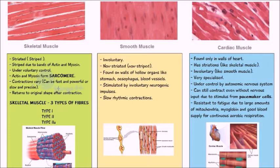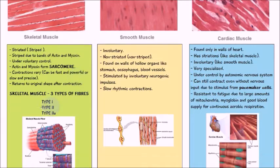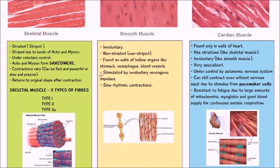The contractions vary, so they can either be fast and powerful or very slow and precise. The most important thing you need to know about skeletal muscle is that it's under voluntary control — you're able to move any body part you want, and that's basically due to the voluntary control of skeletal muscle. Another thing is that skeletal muscle will return back to its original shape after contraction. Now there are three fiber types of skeletal muscle: we have type 1, type 2, and type 2a, and these will be mentioned in more detail in the video which will just be on skeletal muscle.